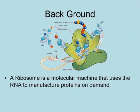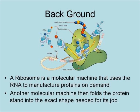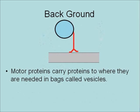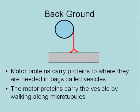A ribosome is a molecular machine that uses the RNA to manufacture proteins on demand. Another molecular machine then folds the protein strand that is produced into the exact shape needed for its job. Motor proteins carry proteins to where they are needed in bags called vesicles, walking along microtubules.